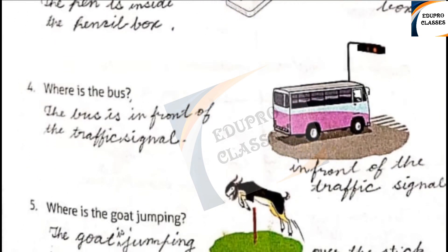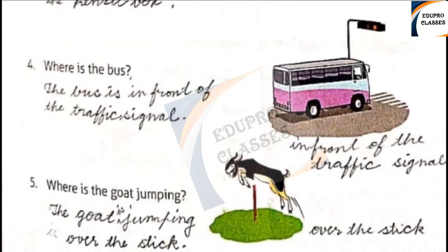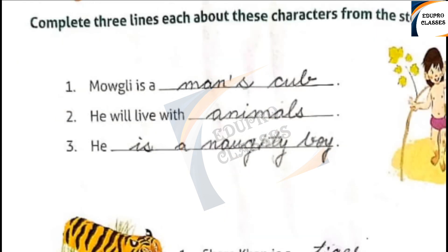Question 5: Where is the dog jumping? The dog is jumping over the stick.